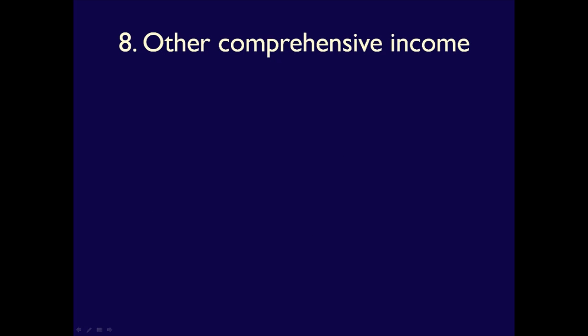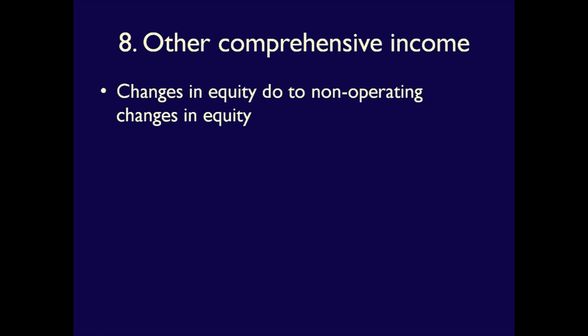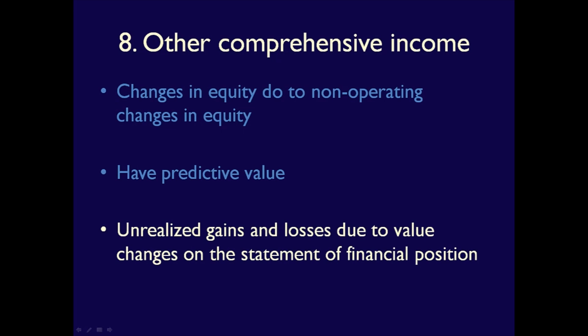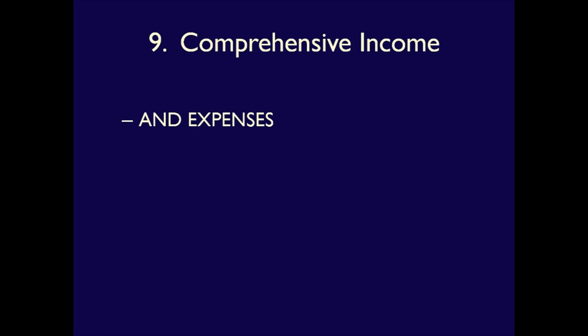Next is other comprehensive income. This area is complex and will be covered in a different video, but other comprehensive income represents gains and losses due to changes in equity that are not part of the normal operations of the business. These non-operating items can be used to assess the riskiness of future earnings, meaning they have predictive value, which is why they are included on the statement. These are unrealized gains or losses due to items such as the revaluing of investments or foreign exchange differences. Line 9 is simply the total of all prior line items and expenses, not including earnings per share since it is a ratio.